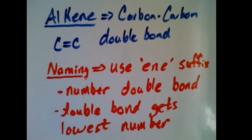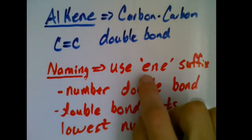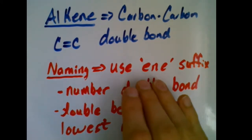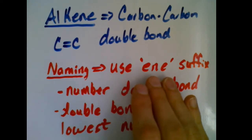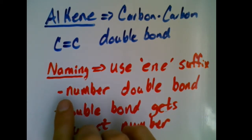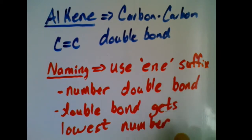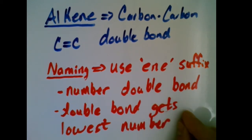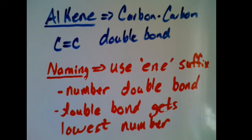When naming an alkene, we change the suffix. We still use the same prefix system — meth, eth, prop — but we change the suffix to '-ene' to identify them as alkenes. The double bond can be in many places in a compound, so we need to number it. The double bond is considered a priority group, so it always gets the lowest number.